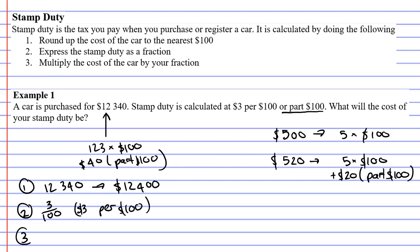And last, for step three, we're going to multiply these together. So we're going to multiply our fraction by the amount that was rounded up, so by $12,400. And see what we get: 3 over 100 times 12,400 comes out to $372, and that's the stamp duty that the government is going to charge you for this car.